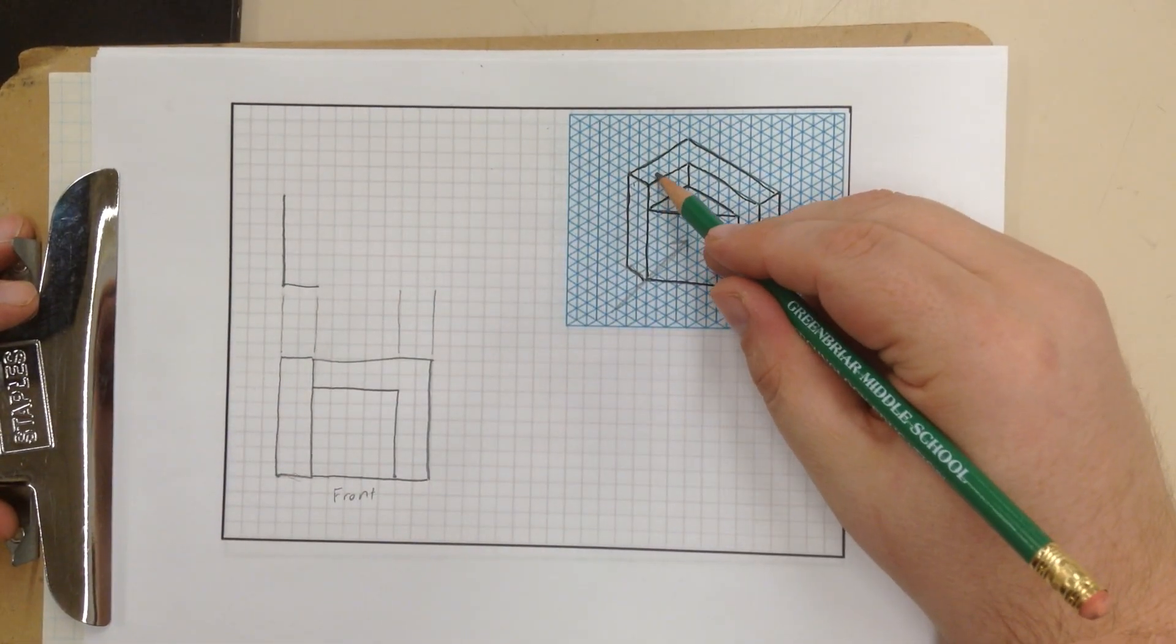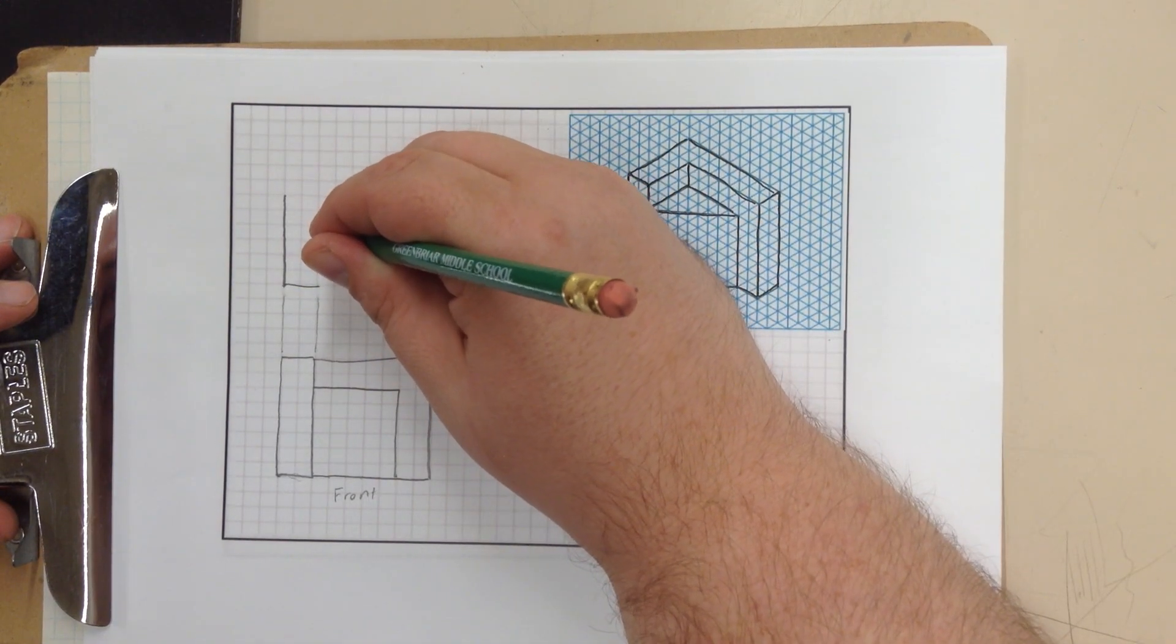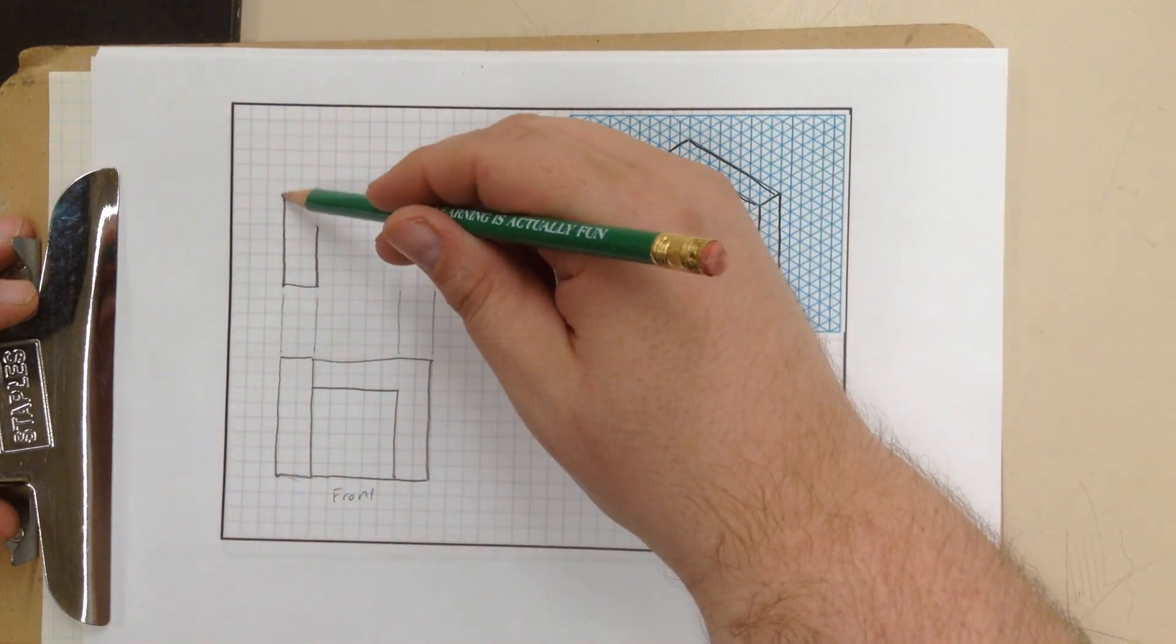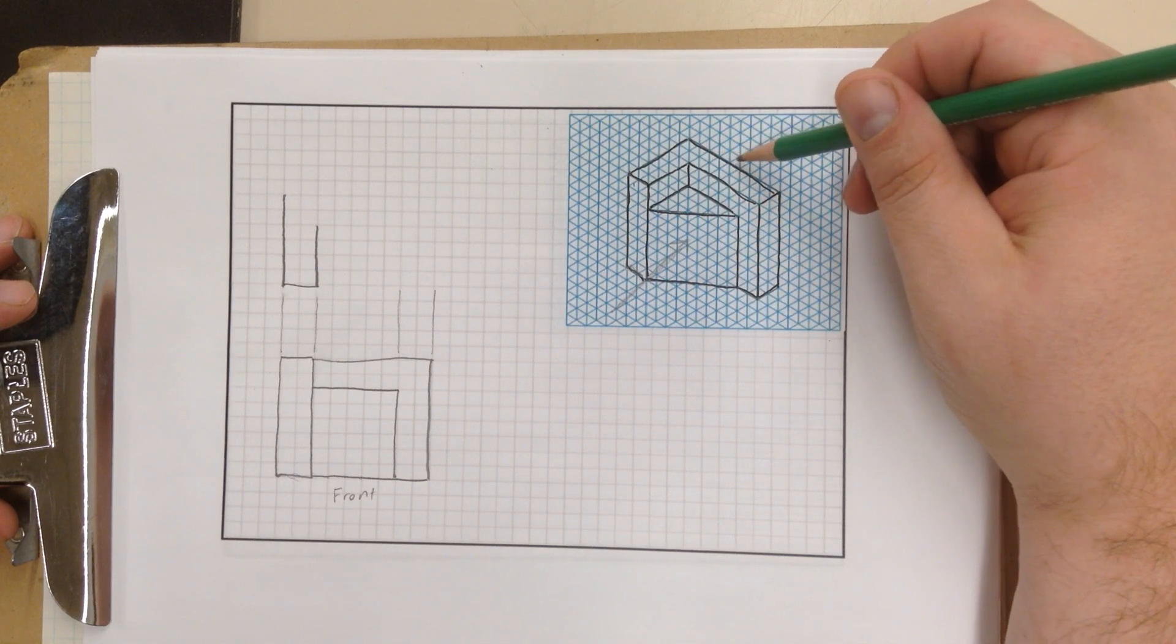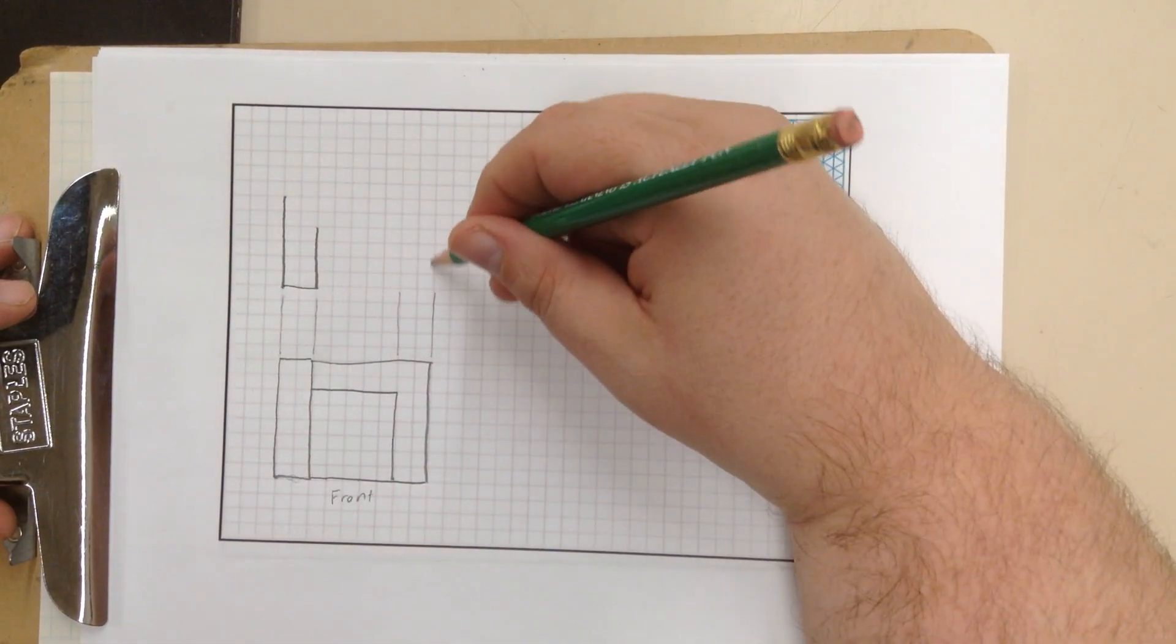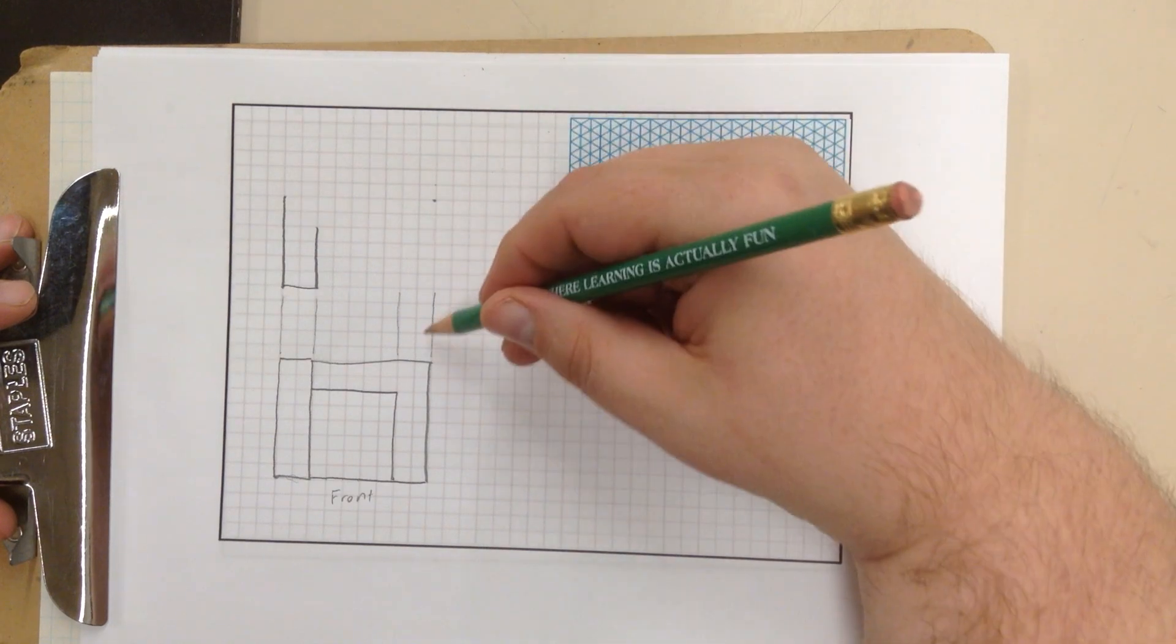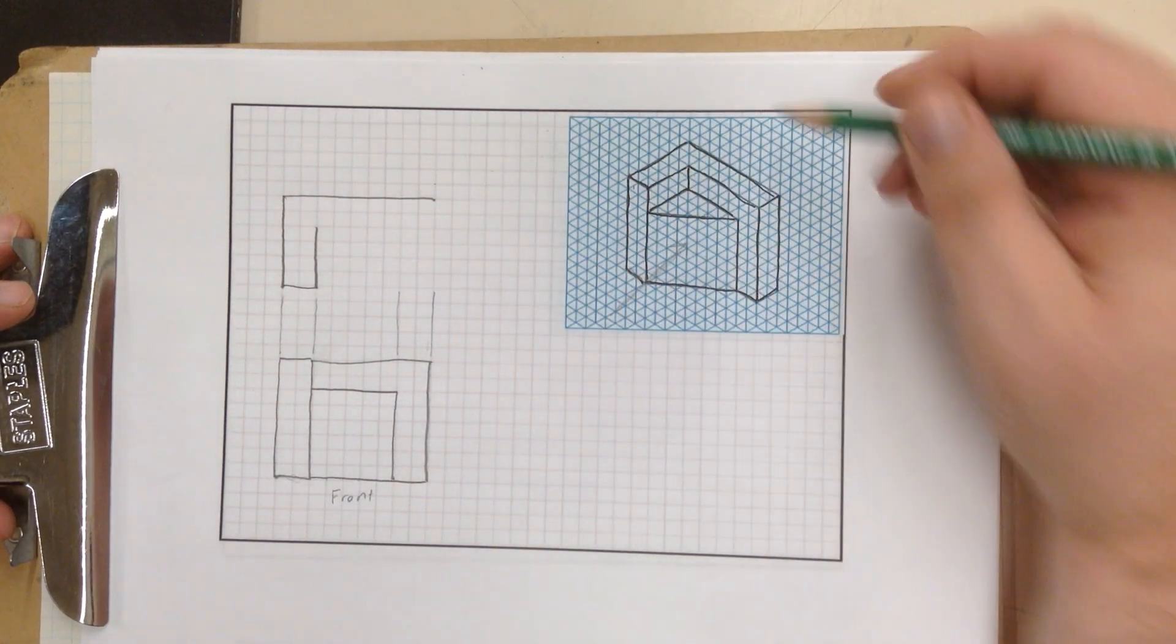And it goes 1, 2, 3, 4 up. 1, 2, 3, 4 up. Okay. So then from there, going to this origin point, which corresponds to that, it is 1, 2, 3, 4, 5, 6, 7, 8, 9 over, which will also correspond to this construction line. So right there, goes straight up, and I can connect that.